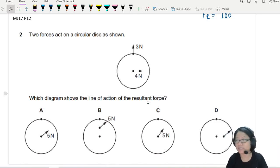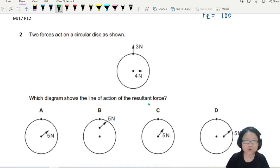Two forces act on a circular disk as shown. Which diagram shows the line of action of the resultant force?